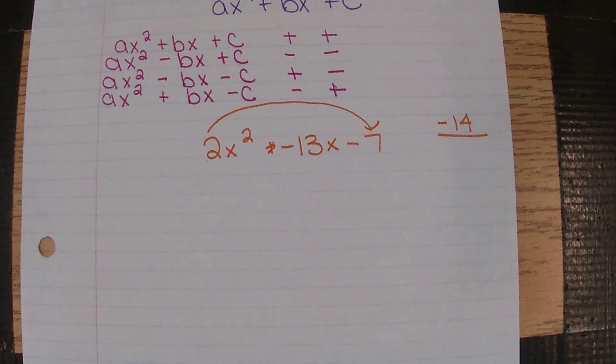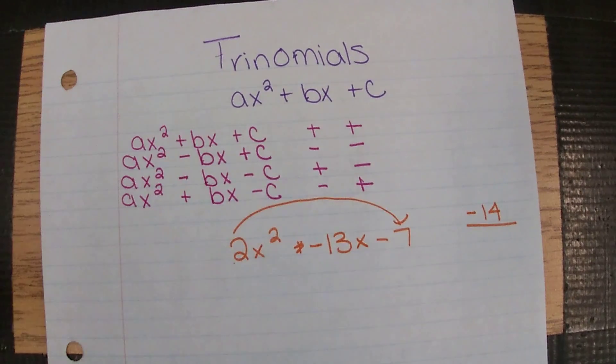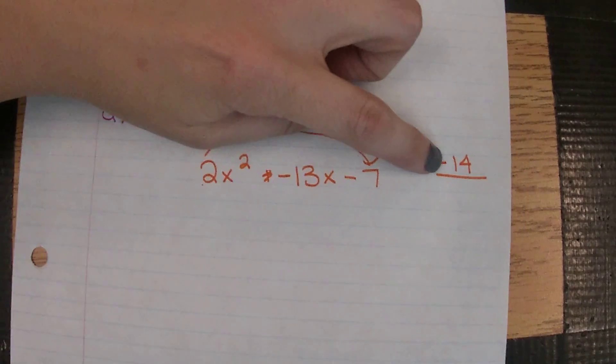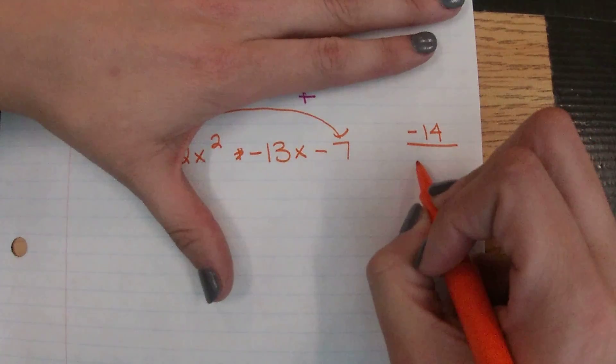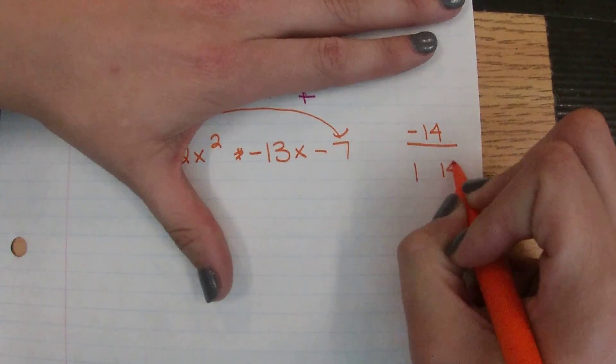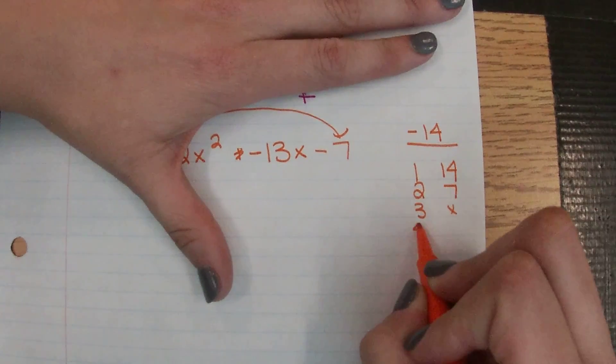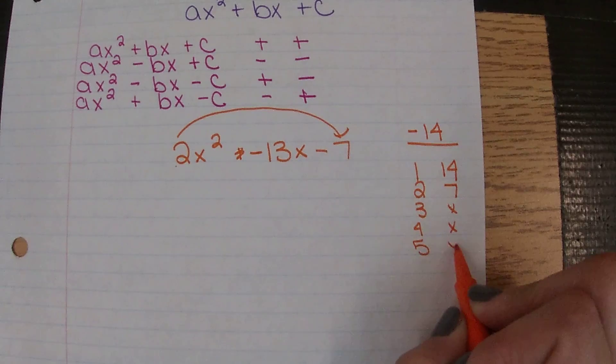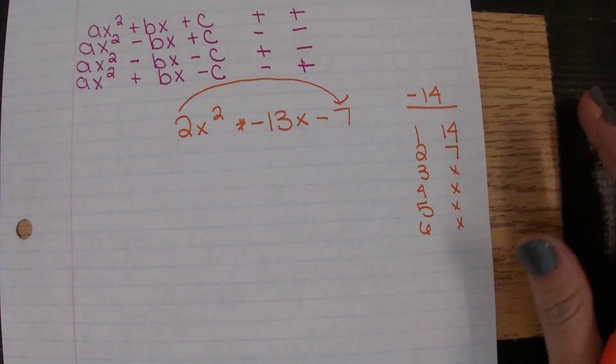So that's where this little cheat sheet I made for you is going to come into play. For the time being, we're going to ignore that this is negative and just start listing numbers that multiply to 14. So 1 and 14, 2 and 7, 3 and nothing, 4 nothing. Hopefully we realize that's nothing else. 5 and nothing, 6 and nothing. The next number would be 7, which we already used.